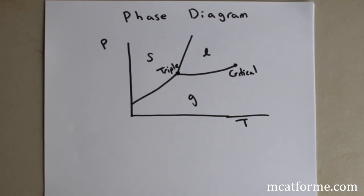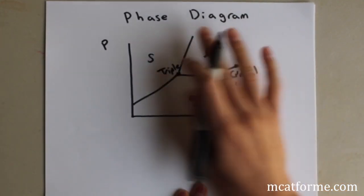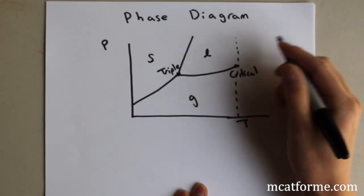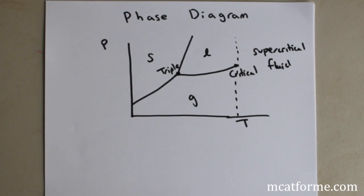The critical point is a little different. The critical point is when the liquid and the vapor have the same density, so you can't tell whether you're in the liquid or the gas phase — it's indistinguishable. It's not in equilibrium, but it's indistinguishable between liquid and gas. When you go past the critical point, those are important points to keep track of.